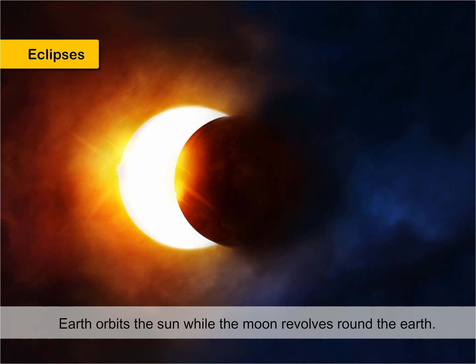Eclipses. Earth orbits the sun while the moon revolves around the earth. During this revolution, the earth, sun and moon form a straight line. Sometimes the earth comes between the moon and the sun, and at other times, the moon comes between the sun and the earth. This is when an eclipse occurs, and the heavenly body casts a shadow, which hides the other heavenly body from the sun.